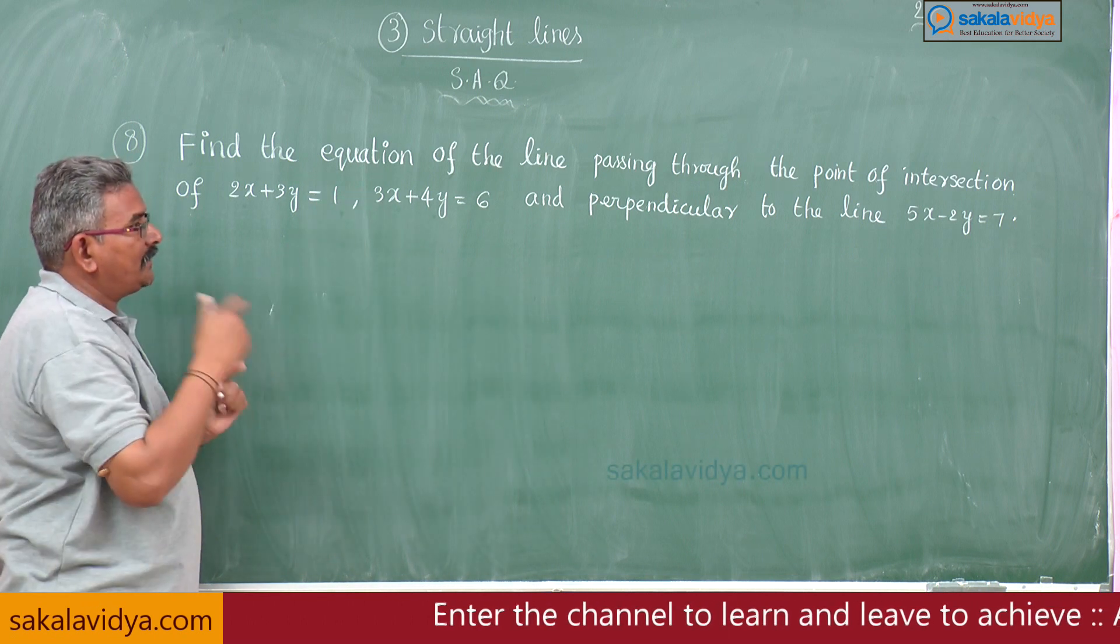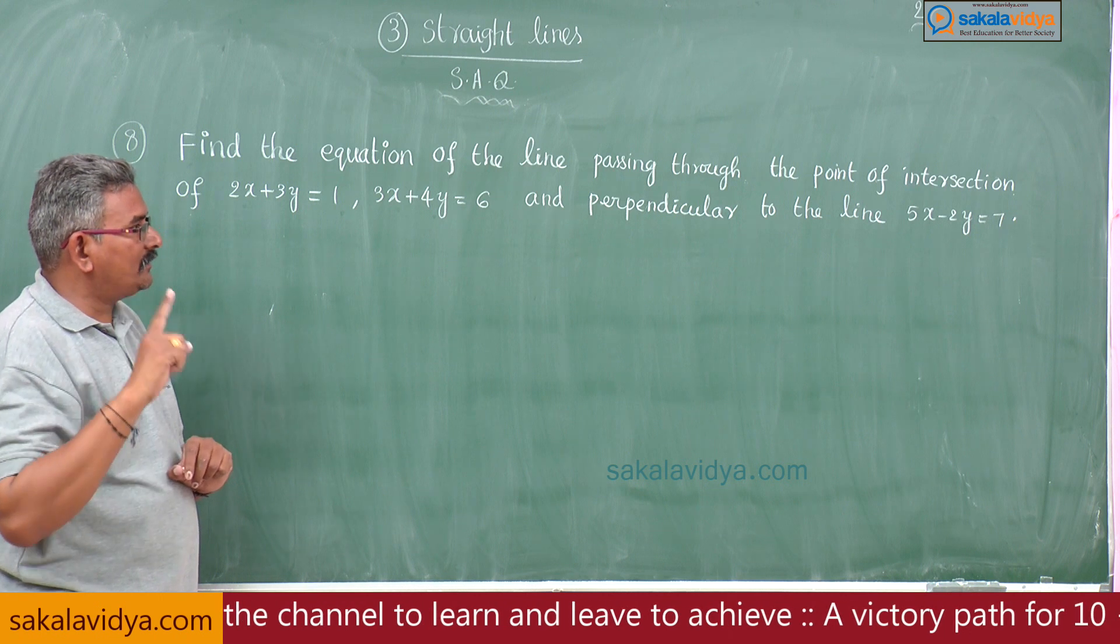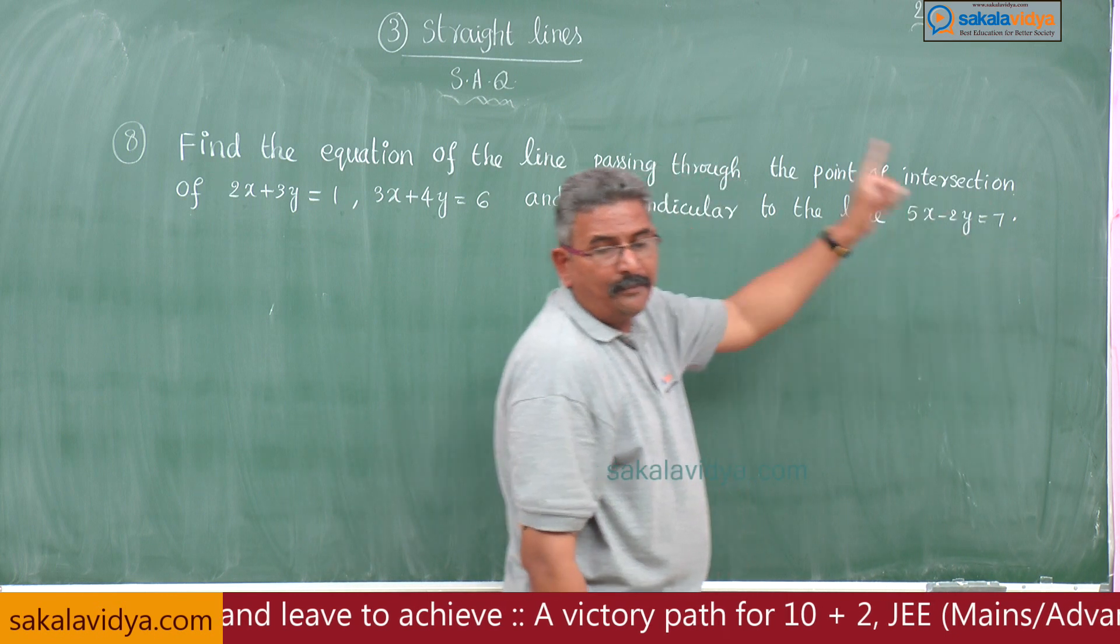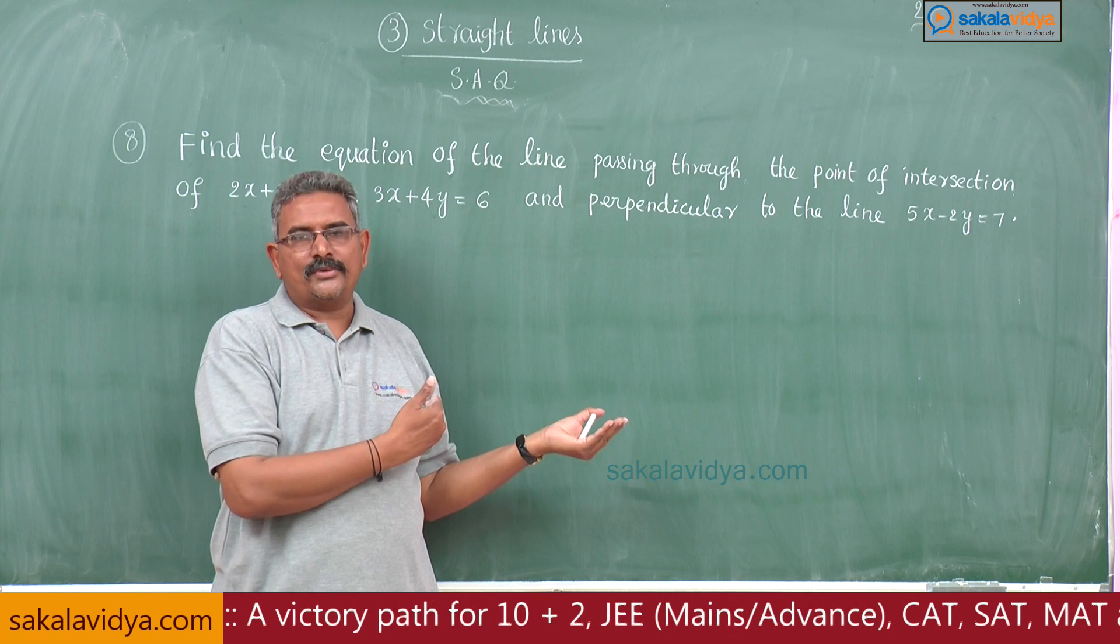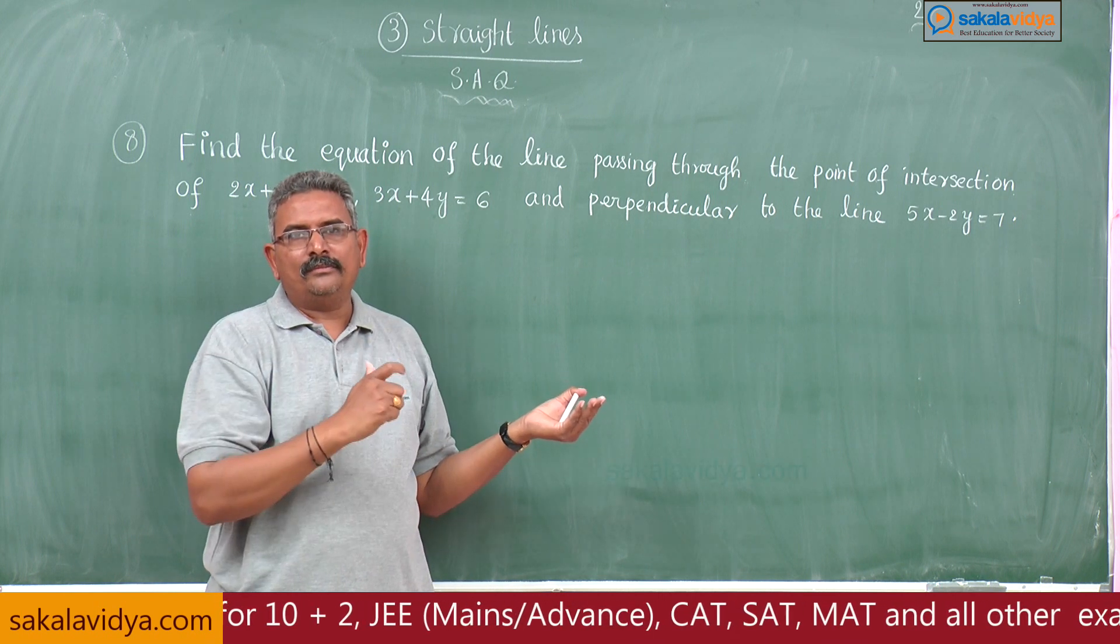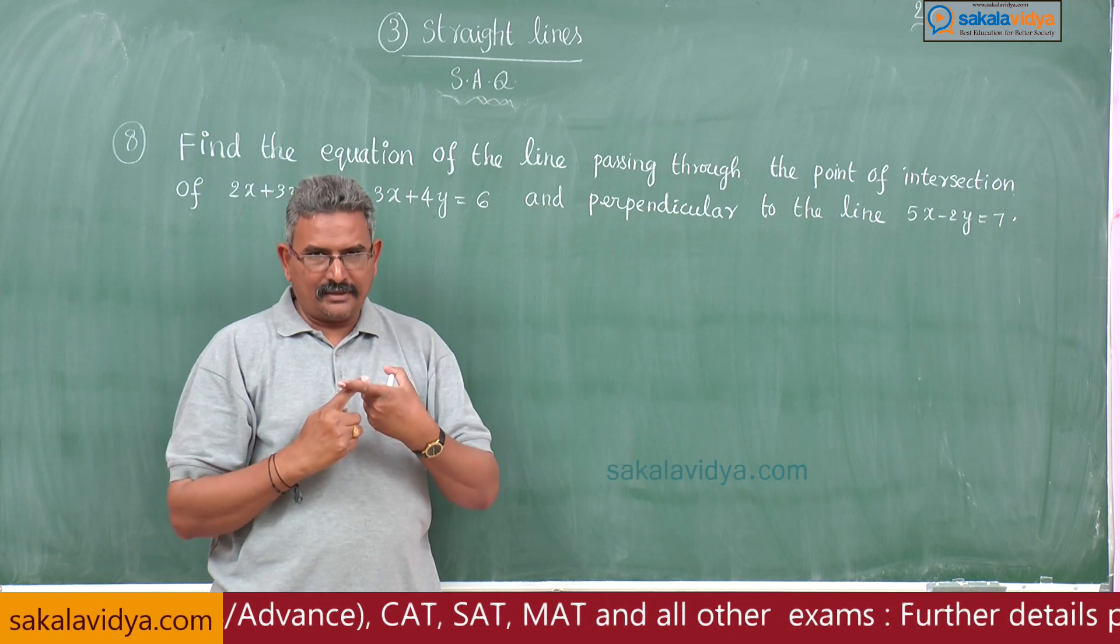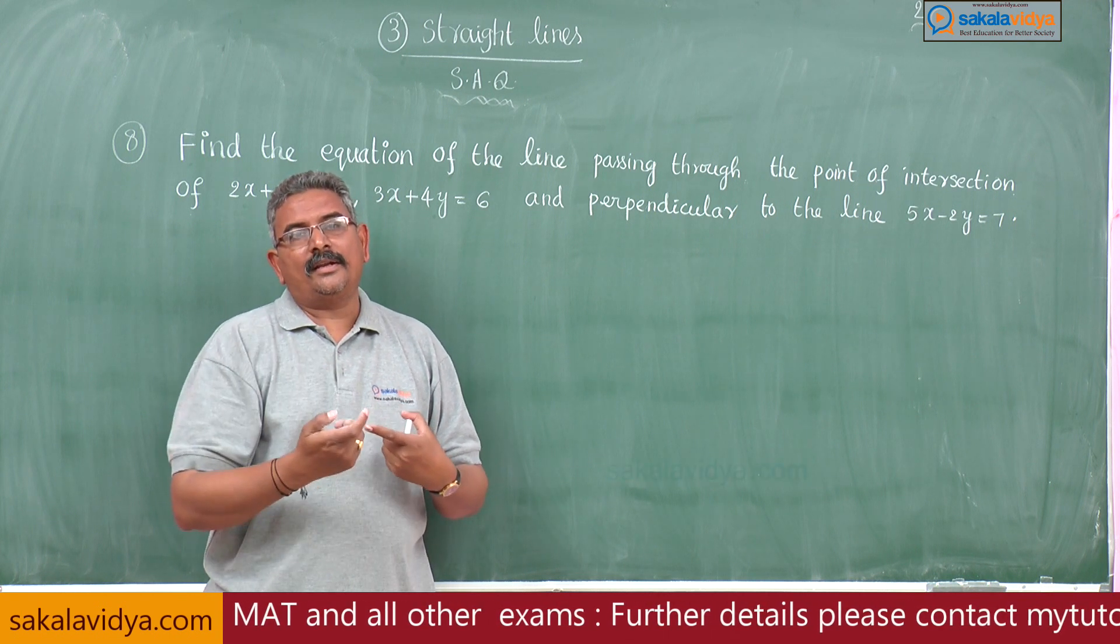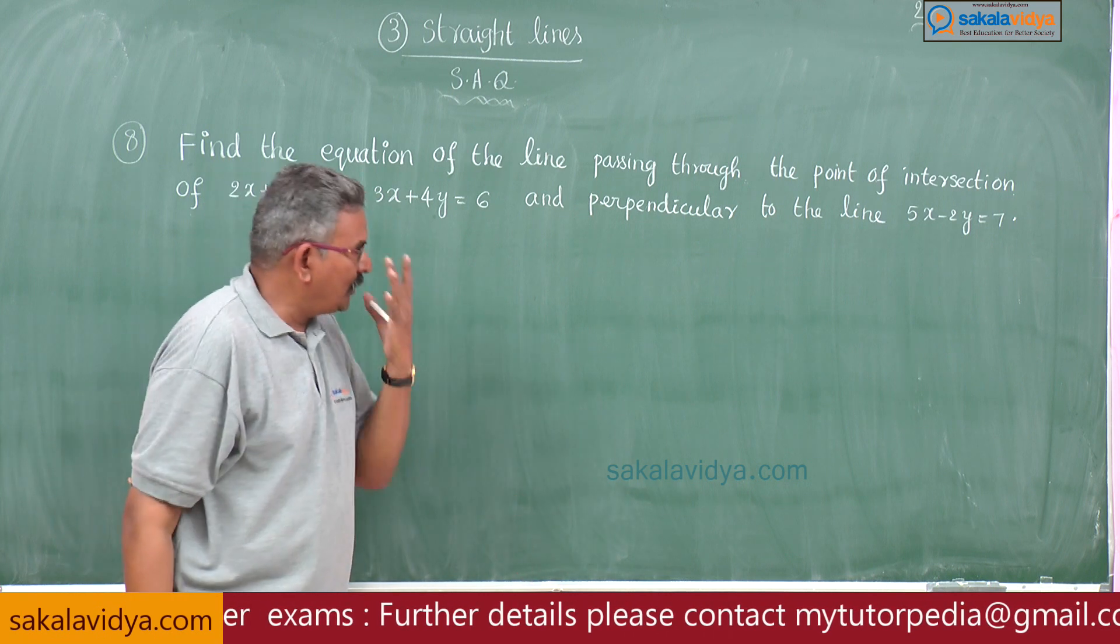After getting the point of intersection, we have to find any equation of the line perpendicular to 5x-2y=7 and passing through the point of intersection. We've done this kind of problem in previous episodes. In this problem, two problems are involved: finding the point of intersection of two lines, and finding the equation of the line perpendicular to the given line. Let us do it.